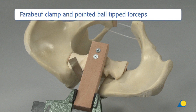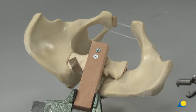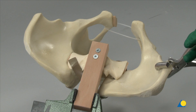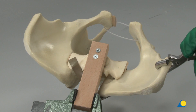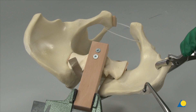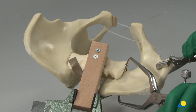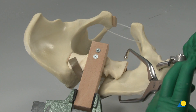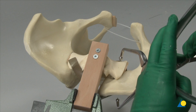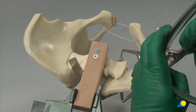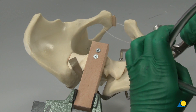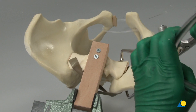Reduction using a Faraboeuf clamp and the pointed ball-tipped forceps. As an alternative reduction technique, the iliac crest can be grasped and manipulated with a Faraboeuf clamp. In addition, an asymmetric or symmetric pointed ball-tipped forceps is inserted with one branch on the outer surface of the iliac bone and the other branch on the anterior aspect of the sacral ala.